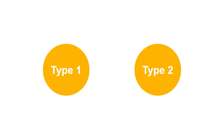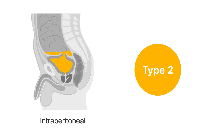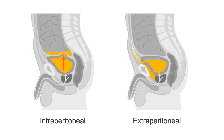Bladder injury is characterized as one of two types: either intraperitoneal rupture, which involves the dome and causes urine to spill into the peritoneal cavity surrounding the bowel loops, or extraperitoneal rupture, which is usually anterior and the leaking urine is confined to the space surrounding the bladder.